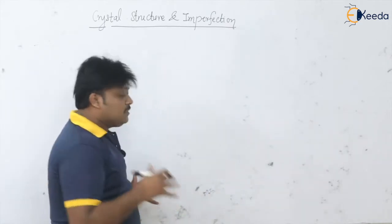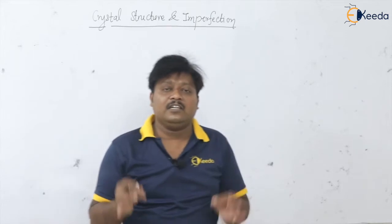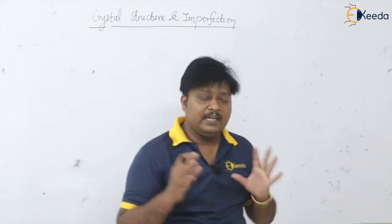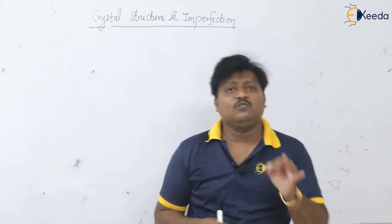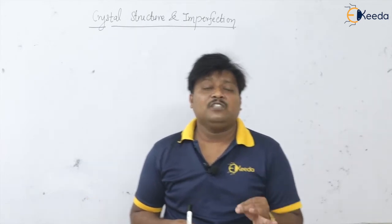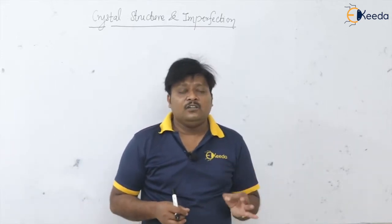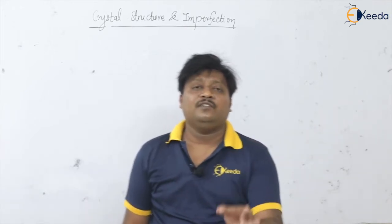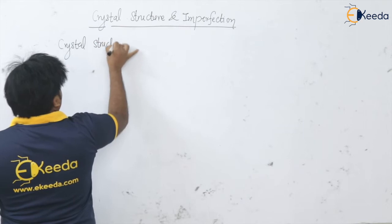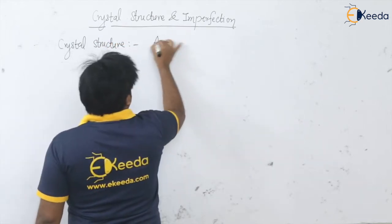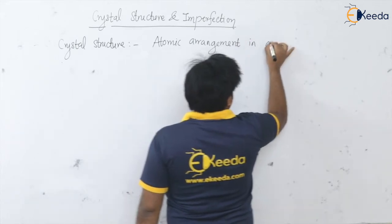This subject, material science, is quite a theoretical subject, so I will write some short notes on the board — you can pause the video to see the important notes. So, crystal structure gives us the atomic arrangements or the positions of atoms in a given solid body. Crystal structure is nothing but the atomic arrangement of a solid.